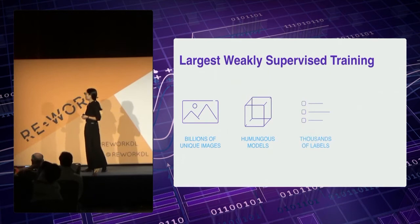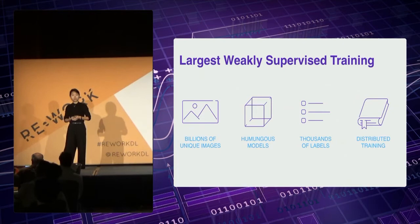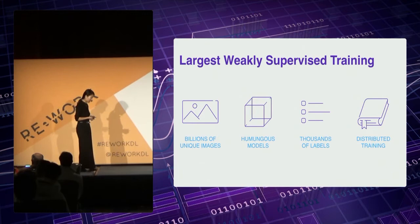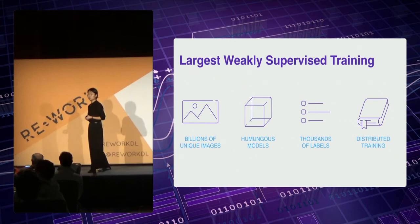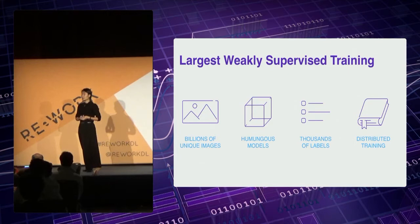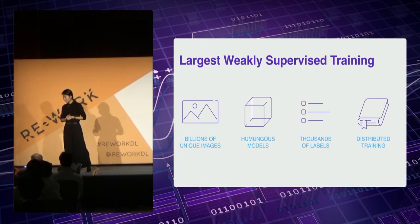Our largest model is trained on currently 3.5 billion public Instagram images. We're now able to train models at much bigger capacity than ever before — the largest model we've tried has 861 million parameters. We leverage Facebook's distributed training infrastructure and train this model on almost 350 GPUs. This training is done at an order of magnitude more images than ever done elsewhere. And I'd like to emphasize that we did not perform complicated cleaning procedures to eliminate the noise inherent in the hashtag annotation.